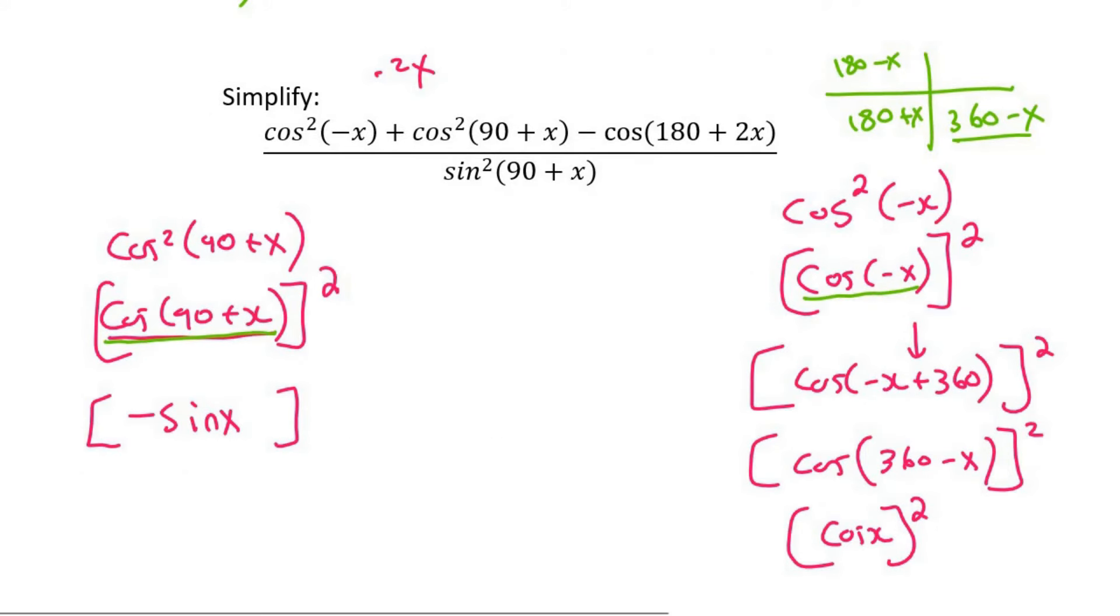And so remember to put the 2. Now, this is where some students get a little bit wrong. If you take minus sin x and you square it, it's going to give you positive sin squared x. Because a negative and a negative would make a positive. So that part over there is going to become sin squared x.